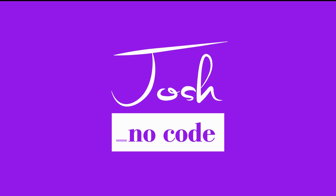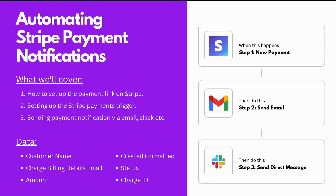Hey guys, welcome back to Josh No Code. Today we're going to be talking about how to automate Stripe payment notifications. We're going to be creating a Zap that triggers whenever we get a new payment in Stripe, and we're going to be sending details related to that payment over Gmail and then via a Slack message.